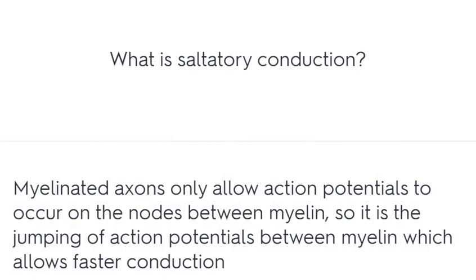What is saltatory conduction? Myelinated axons only allow action potentials to occur on the nodes between myelin, so it is the jumping of action potentials between myelin, which allows faster conduction.